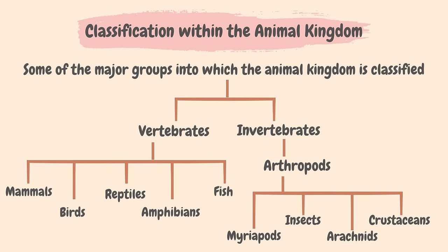Now we will learn how organisms within the plant kingdom can be grouped. At least some parts of any plant are green because of the green pigment chlorophyll, which absorbs light energy from the sun for photosynthesis. The plant kingdom can be sorted into ferns and flowering plants. Ferns have leaves called fronds; they do not produce flowers but instead reproduce by spores, which are present on the underside of fronds.